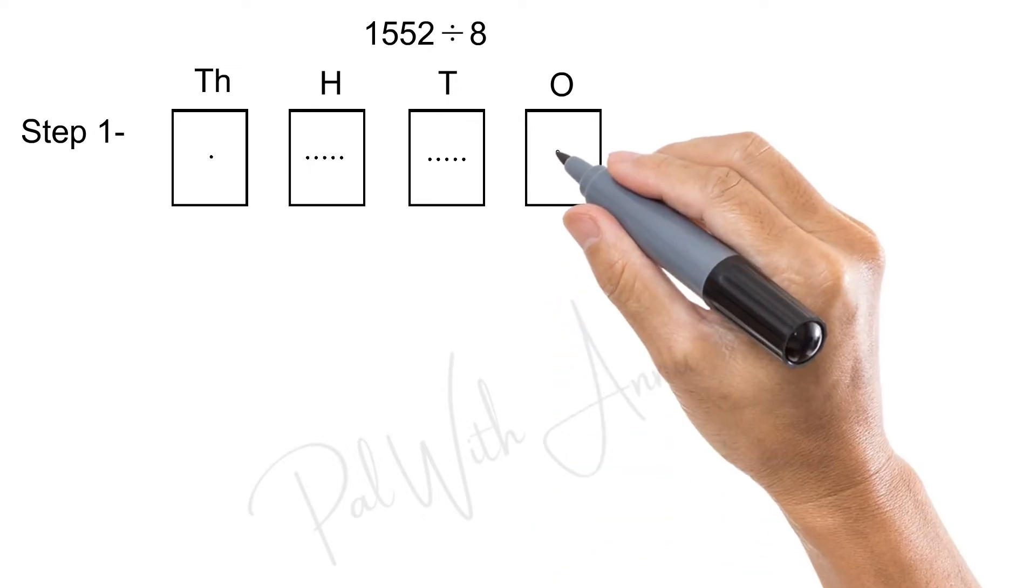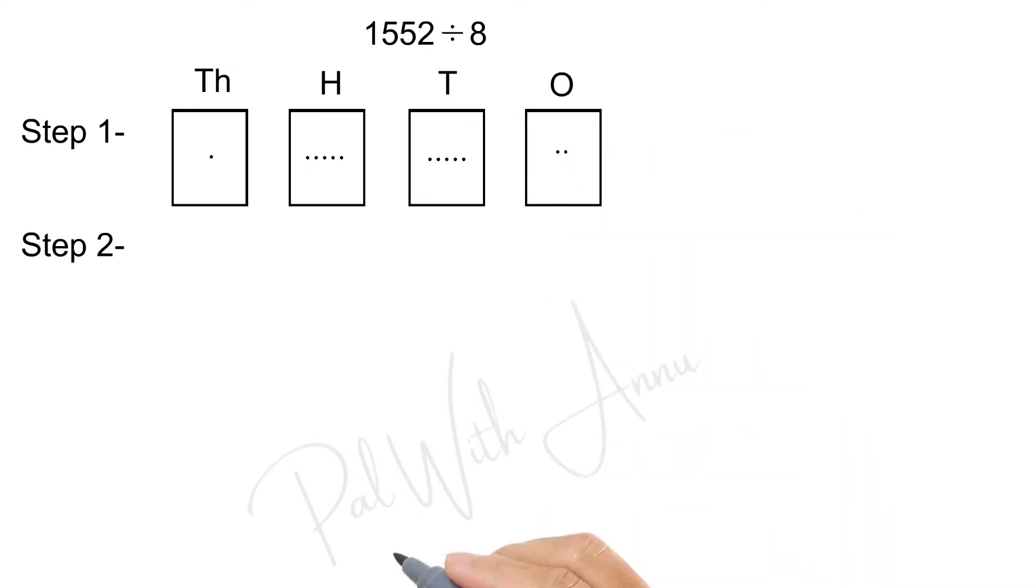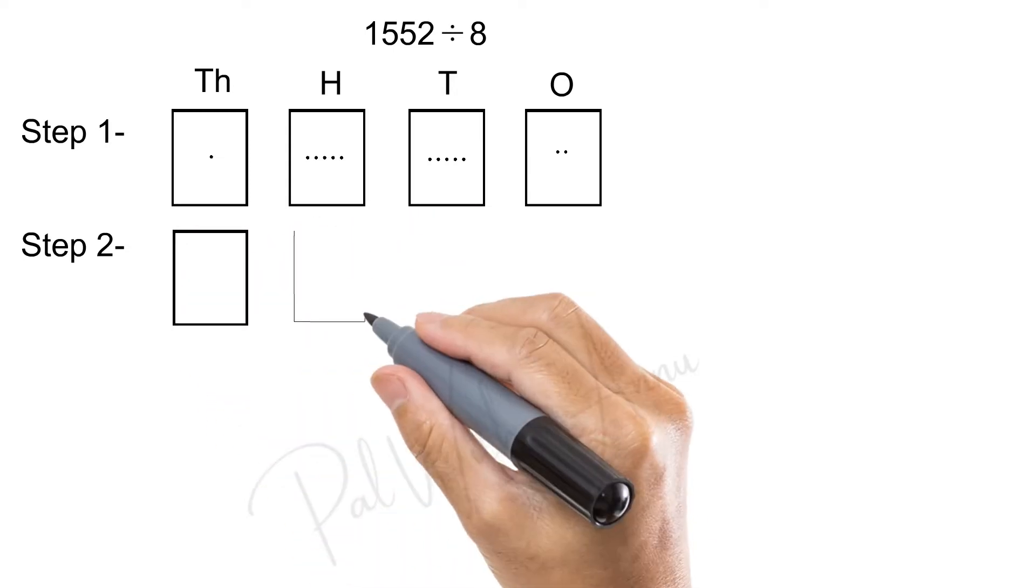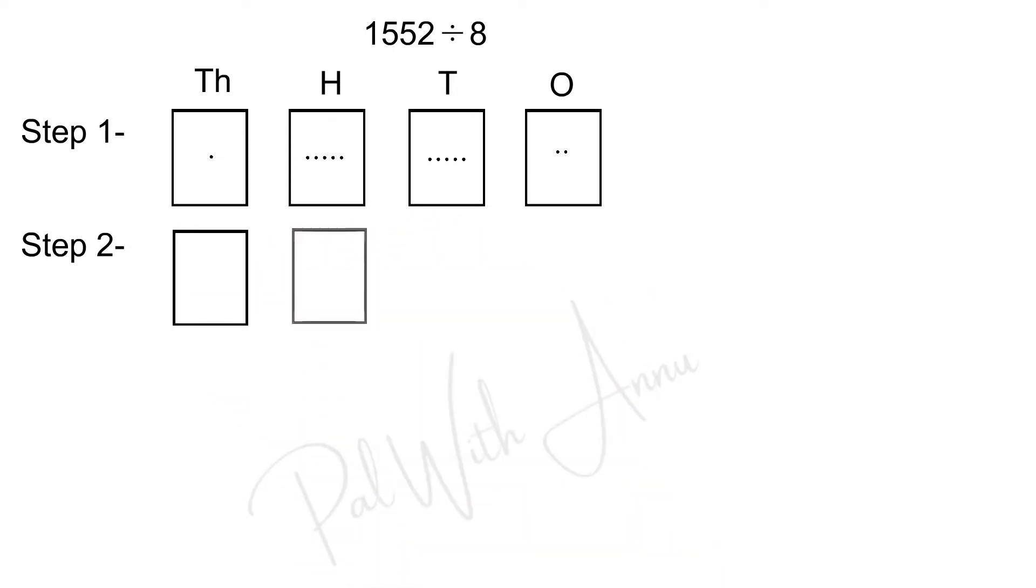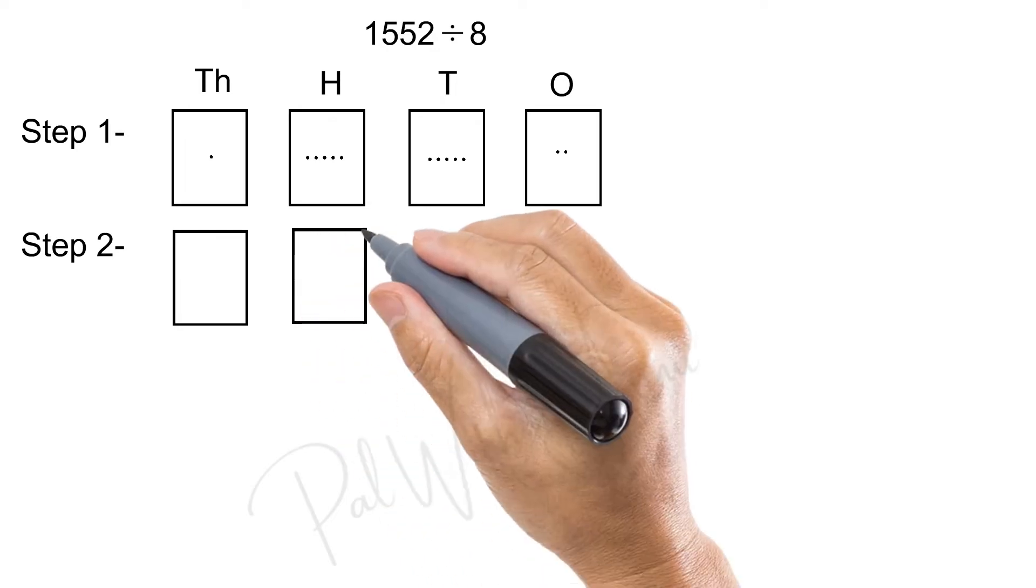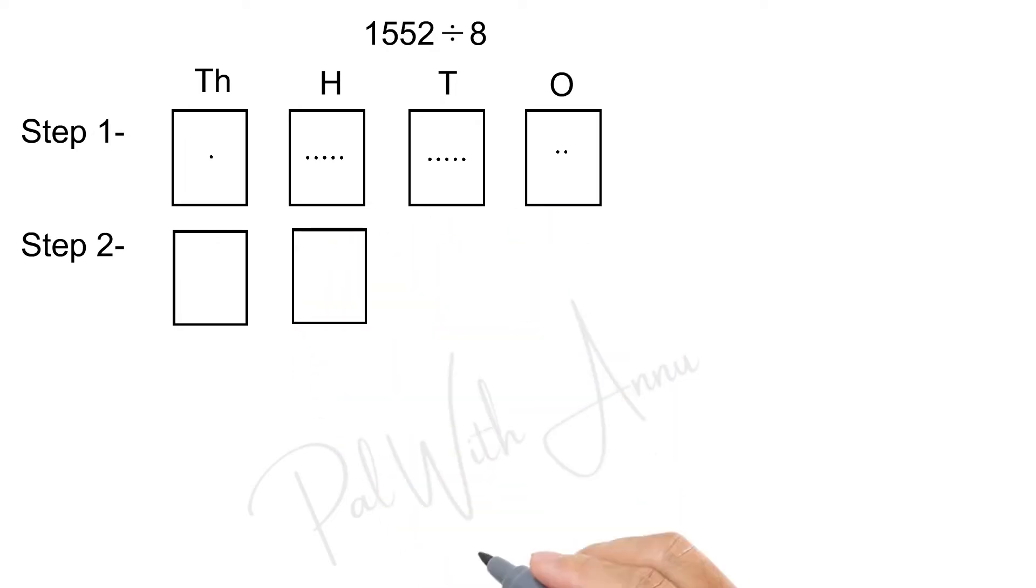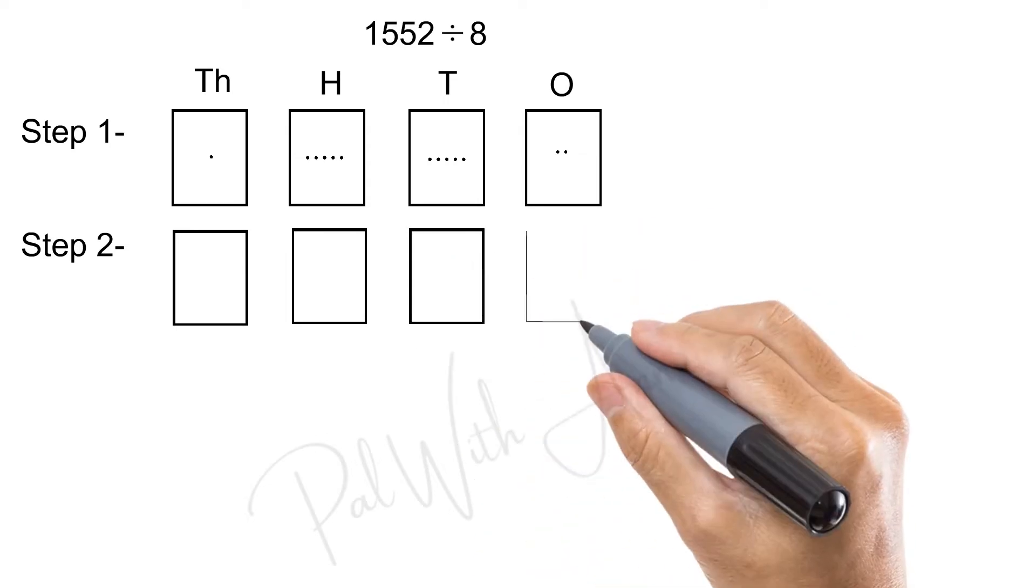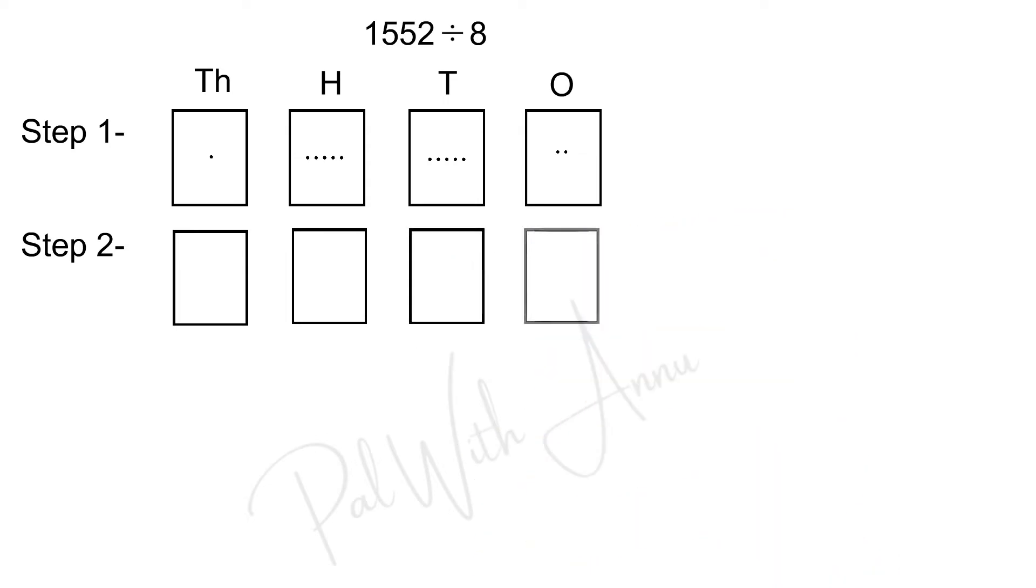Now, we will move to step 2. Again, there are 4 boxes. Here, the divisor is 8. That means, we are going to divide by 8. So, in 1000's box, the number is 1. And this number, you can't divide by 8. So, we have to move this number to 100's box.